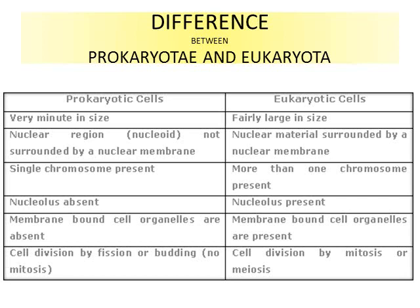What is a prokaryotic cell? A prokaryotic cell is a cell with an underdeveloped nucleus. 'Pro' means primitive or ancient, so prokaryotic cells have a primitive nucleus. What is a eukaryotic cell? Eukaryotic cells are cells with a well-developed nucleus, and all nuclear materials are present within a nuclear membrane.